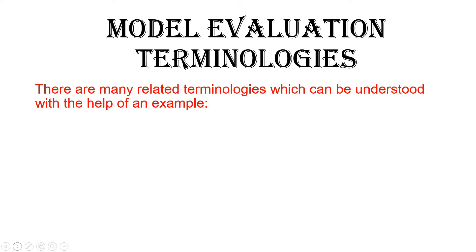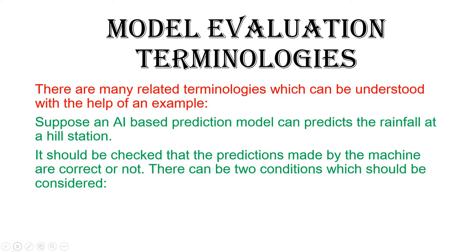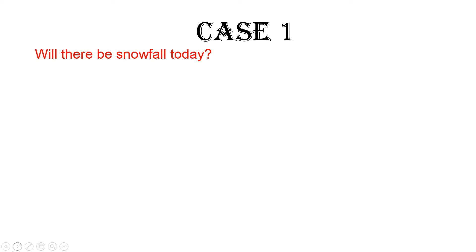Now let's look at the different terminologies used for evaluation. We will take an example of an AI model that can predict rainfall at a hill station. The prediction can be considered on two conditions: first, the prediction — what the machine predicts, whether there will be snowfall or not; and second, the reality — whether snowfall actually happens or not. These four terms are very important; if you understand them you can easily attempt the numerical questions in the exam.